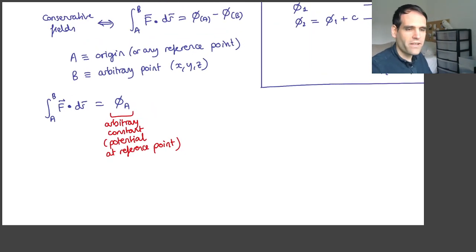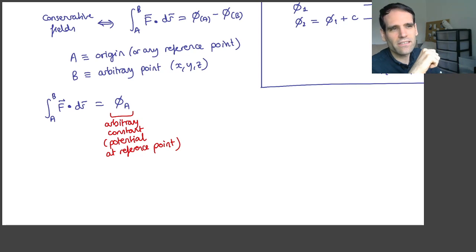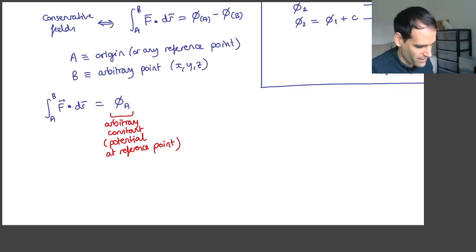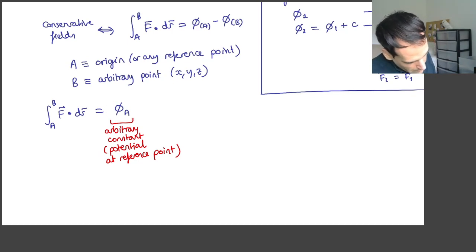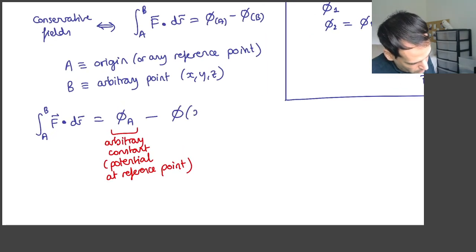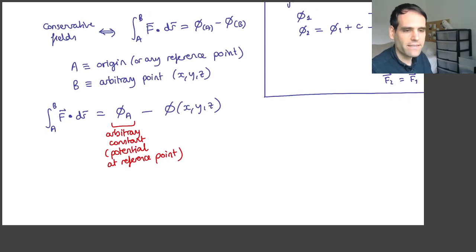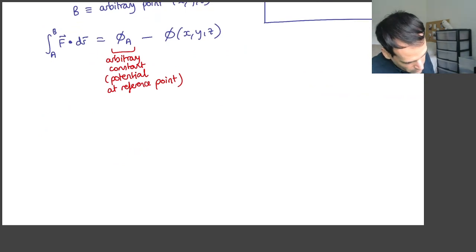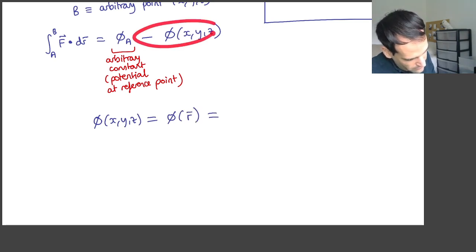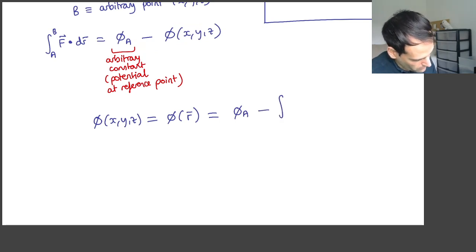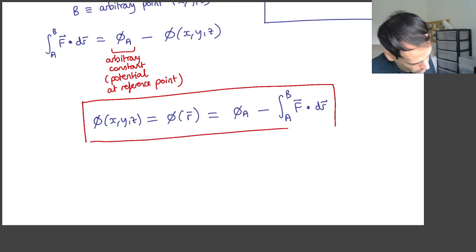In the problems I'll do next, the reference point will be the origin. But for example, if you are considering the potential for a gravitational field, you cannot use the origin because the potential goes to infinity there. So normally for gravitational fields, we take the reference point a as a point at infinity. The potential at x, y, z is then this constant minus the line integral from a to b of F dot dr. So to find the potential at any point, we know it will be some constant minus a line integral. Since we have the field, we can choose any line integral between a and b, and we try to choose it in a smart way.